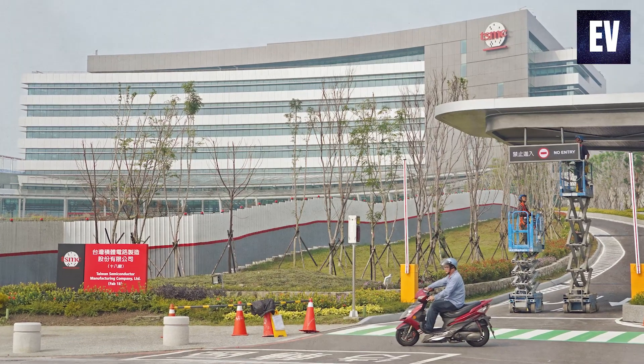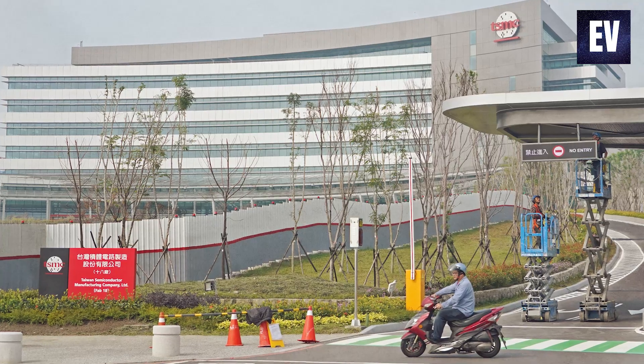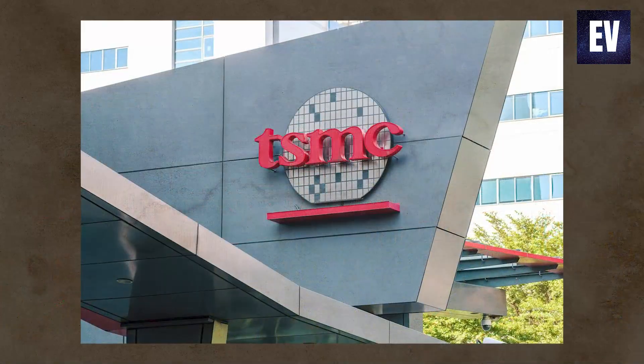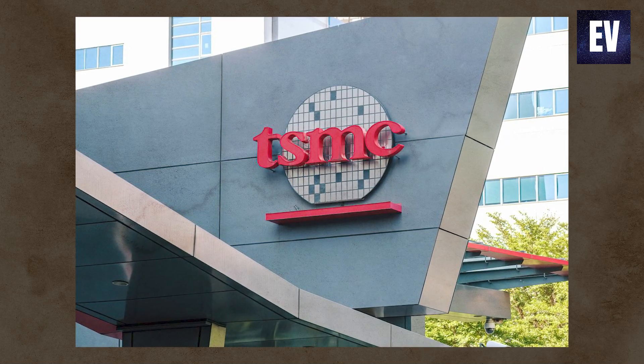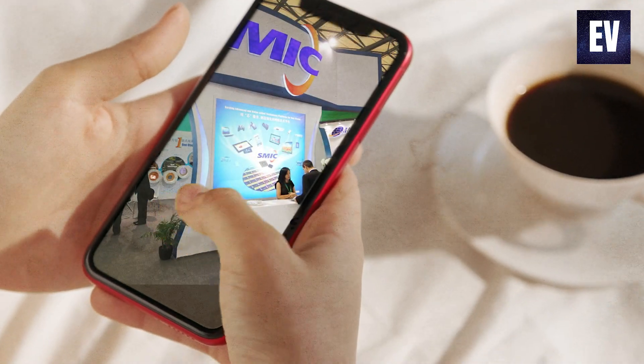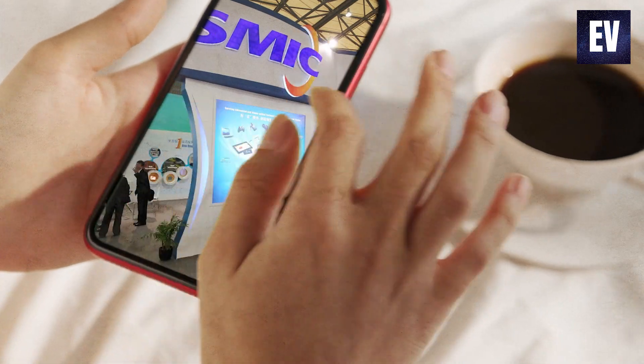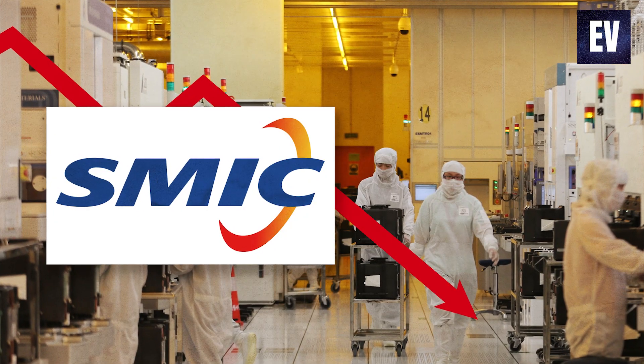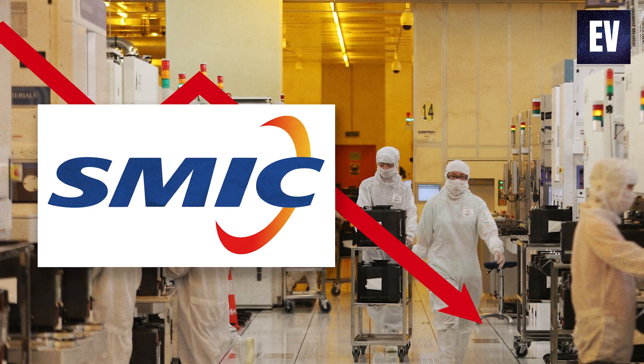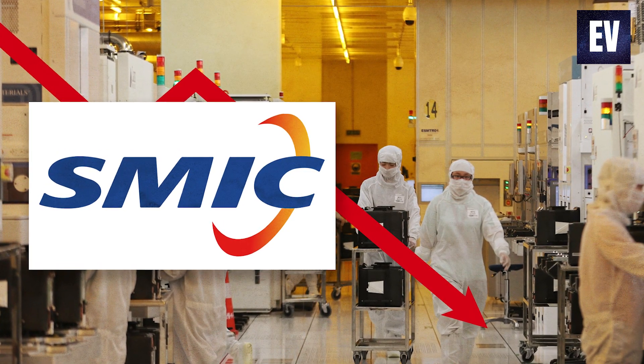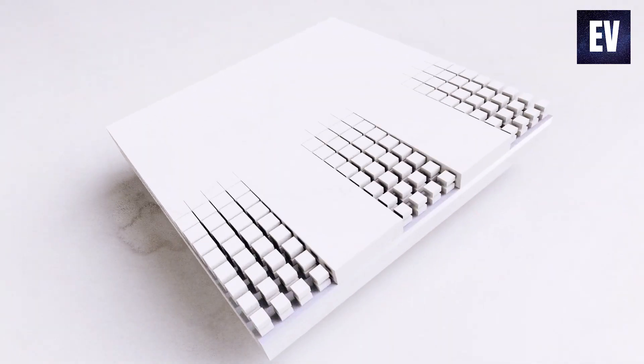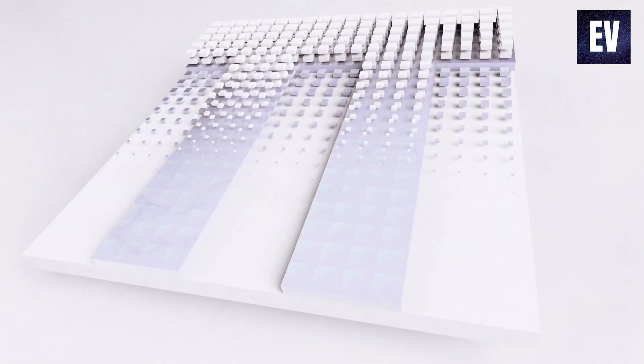TSMC was in charge of the production of Huawei's chips. However, after the introduction of the United States rule, TSMC was no longer able to produce semiconductors for Huawei. Its smartphone business was effectively devastated all over the world as a result. SMIC is also on the United States government's blacklist, which prevents it from accessing American technology. These restrictions could be a source of concern for Chinese enterprises that are currently building their own semiconductors.